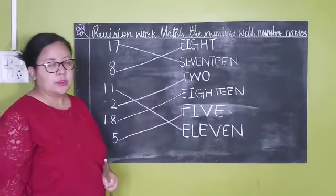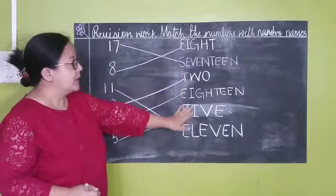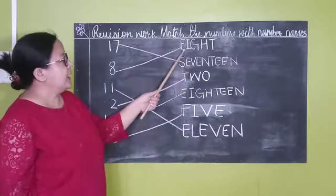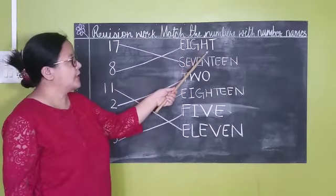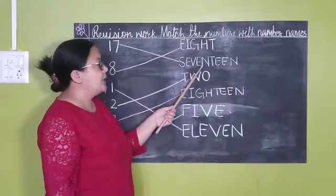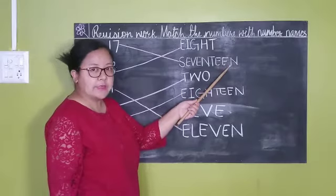So what we did is, we matched the numbers with the number names. Let's read out. Okay? Number names. E, I, G, H, T, 8. S, E, V, E, N, T, E, E, N, 17.